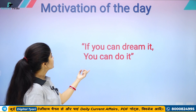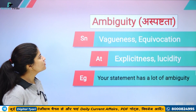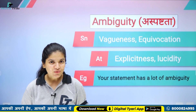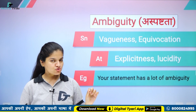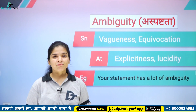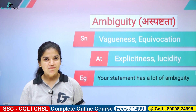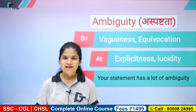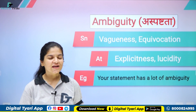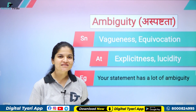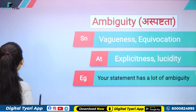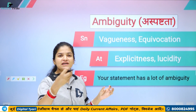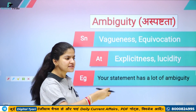Chaliye, aaj ka first word dekhte hain. Toh first word hai — AMBIGUITY. Ye word bahut baar exam mein dekha gaya hai. Aur ambiguity — mujhe bata sakte hain ye kya hai? Ek verb hai, adjective hai, noun hai, kya hai? Kaun sa part of speech hai? Dekhiye, ambiguity ek quality hai — kisi cheez ki, kisi paragraph ki, kisi word ki, ya kisi person ki.